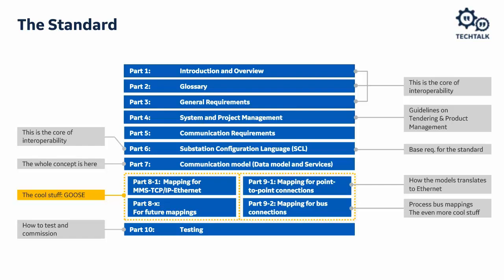Part six is where we get into some really interesting things, where we describe a configuration language. That configuration language is the core of interoperability and also the core of the self-descriptive nature of 61850. That part describes some of the tools you would use, how the file structure should exist from the IEDs, and how you can manipulate them. Part seven is where the communication model and the data model exist — this is where we start to describe things like logical nodes, which I'll talk about in a few slides.